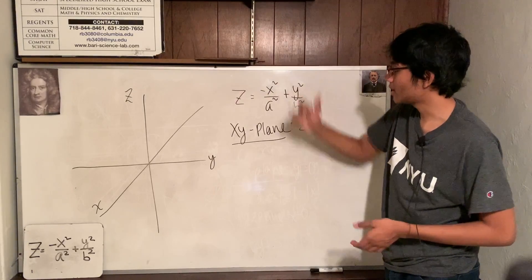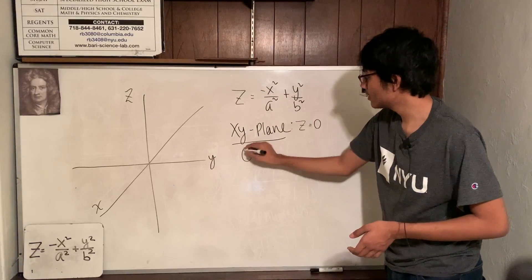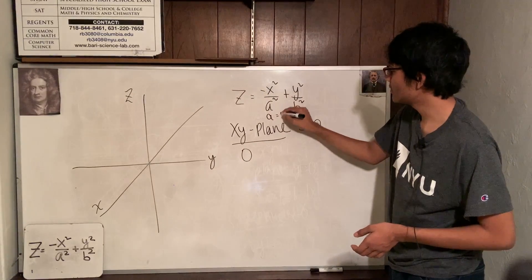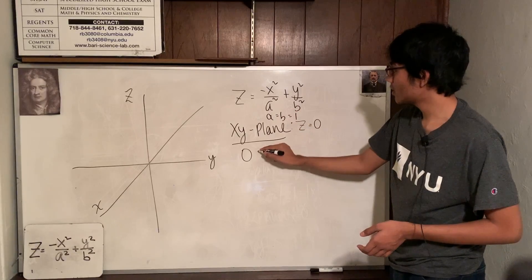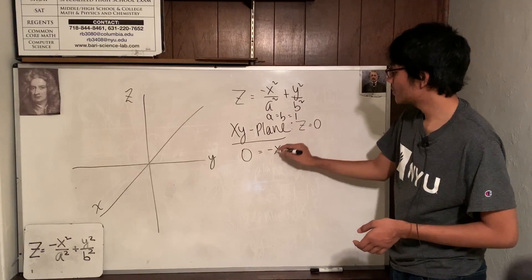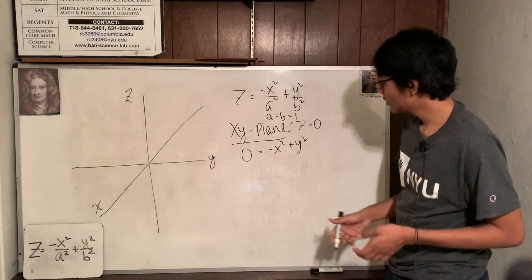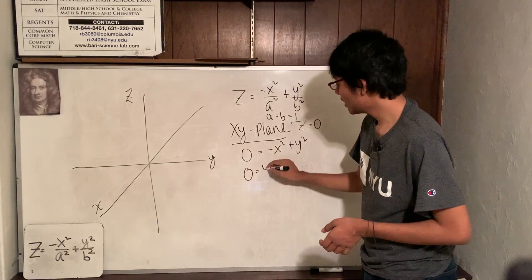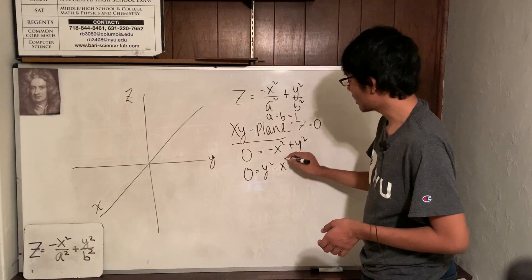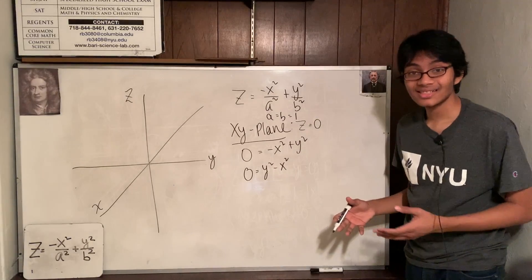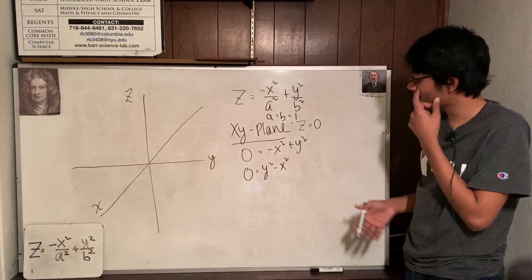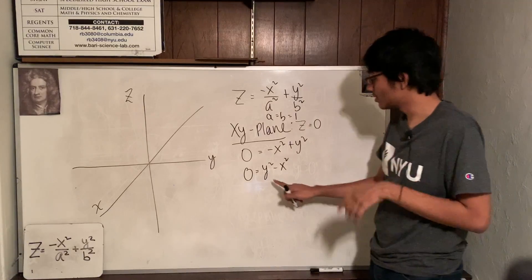Take this term out, pop it out. And what am I left with? Well, assume that a and b are both one. And what I'm left with is zero equals minus x squared plus y squared. Move around the terms and you get zero equals y squared minus x squared. And what is that? That's a hyperbola, right? Isn't it a hyperbola? I think it is.